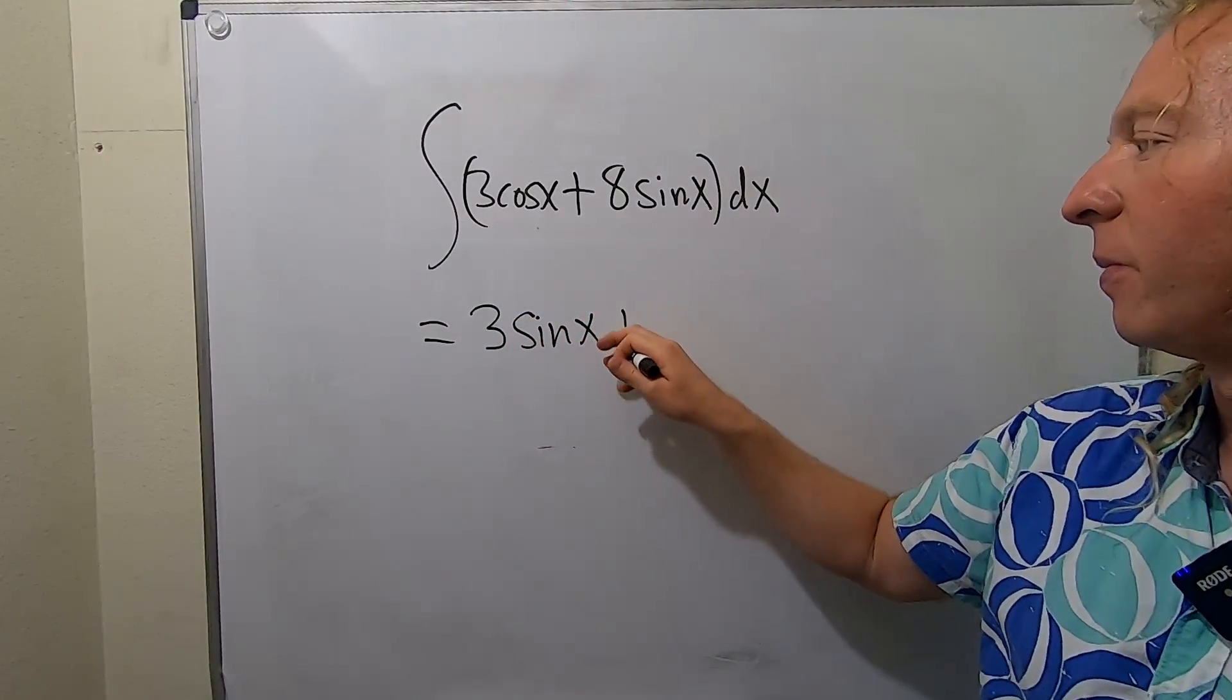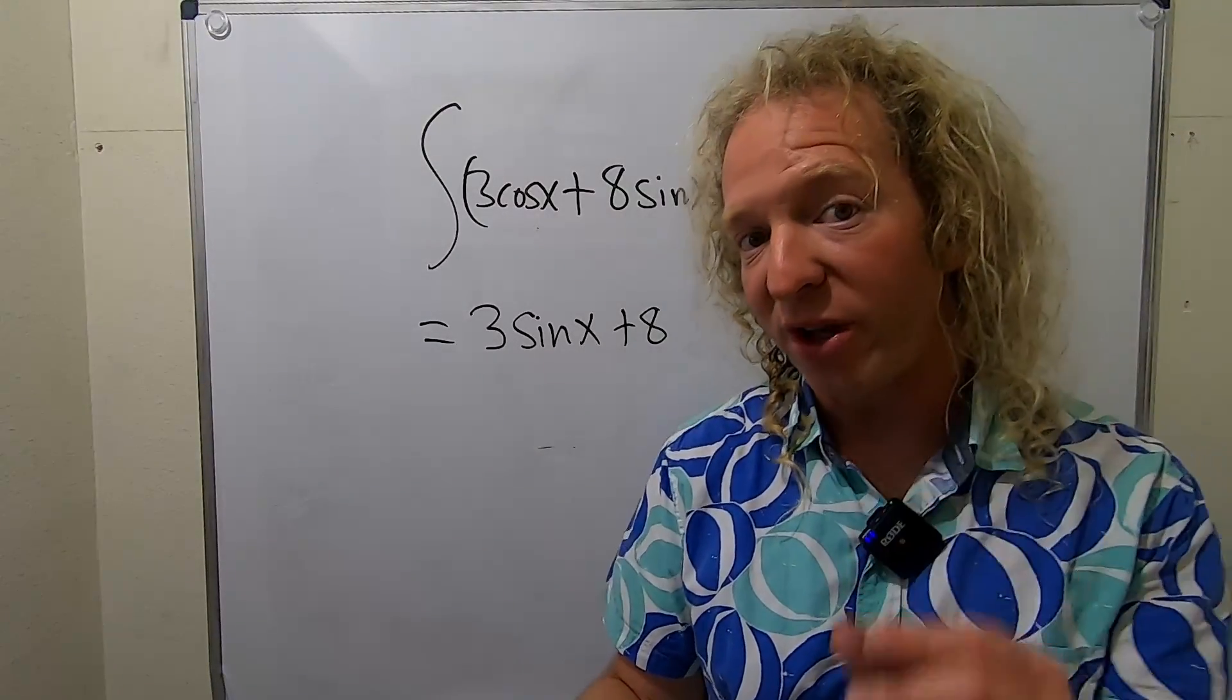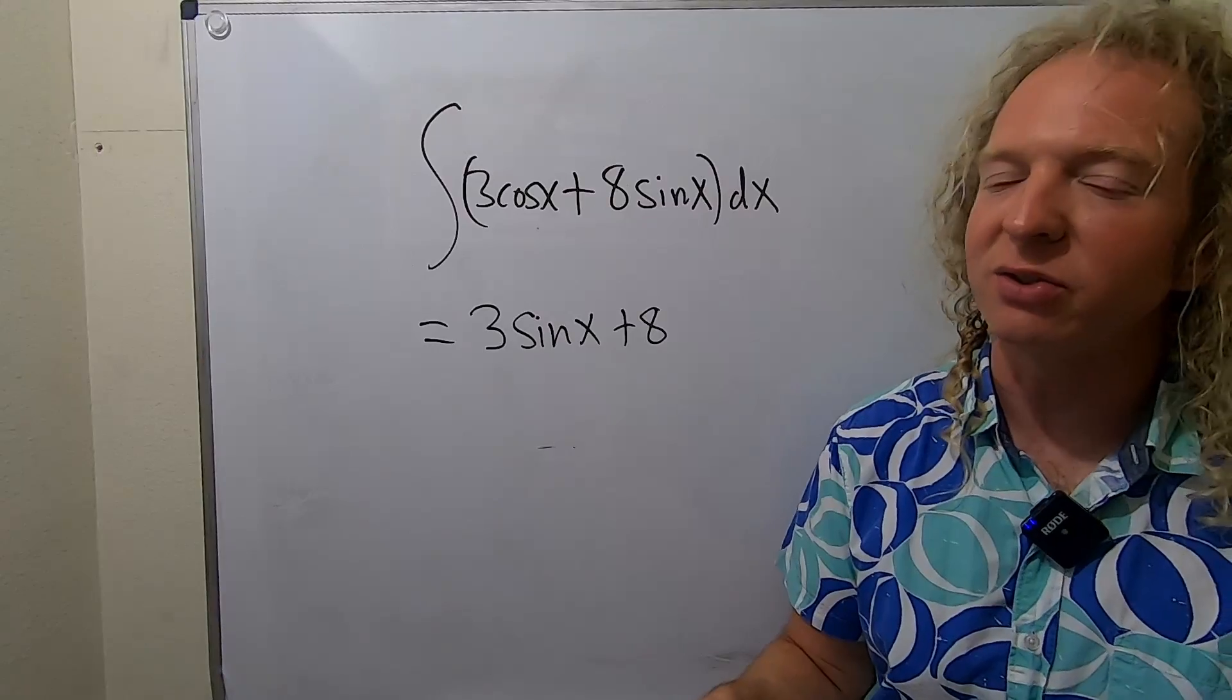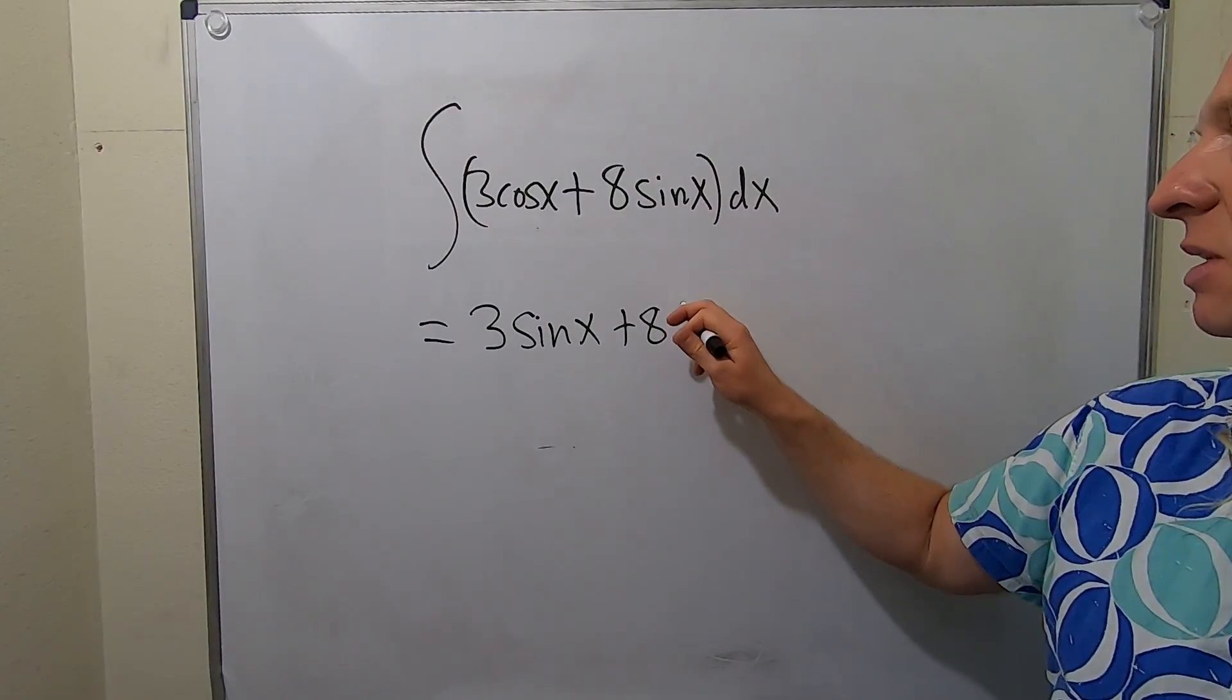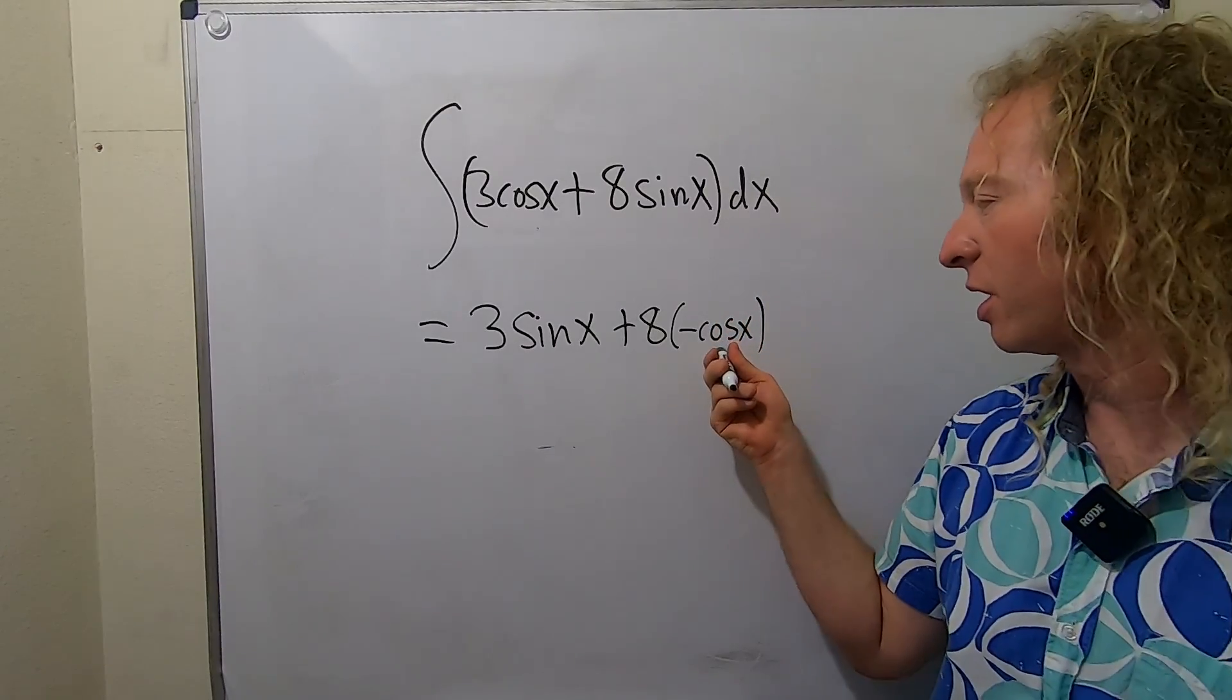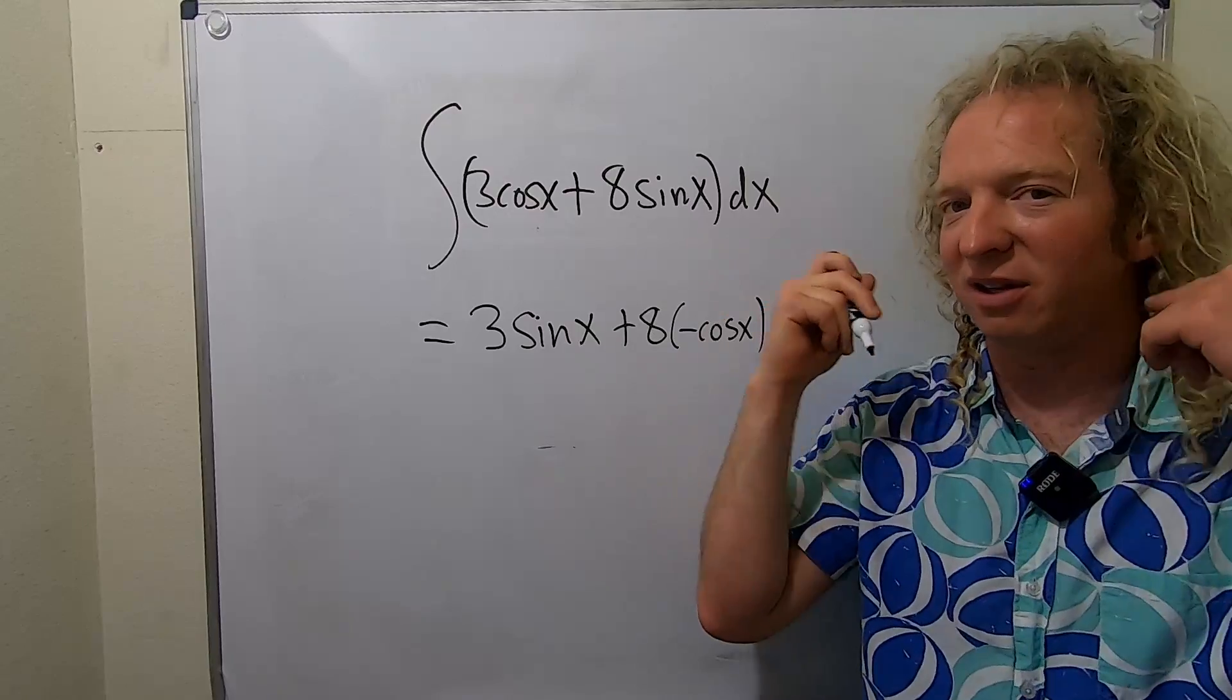The 8 hangs out. Now you have to ask yourself, what's a function whose derivative is sine? So the derivative of cosine is going to give you a negative sine. So this has to be negative cosine. Because when you differentiate negative cosine, you get negative negative sine, and that gives you sine. It's a lot of thinking.